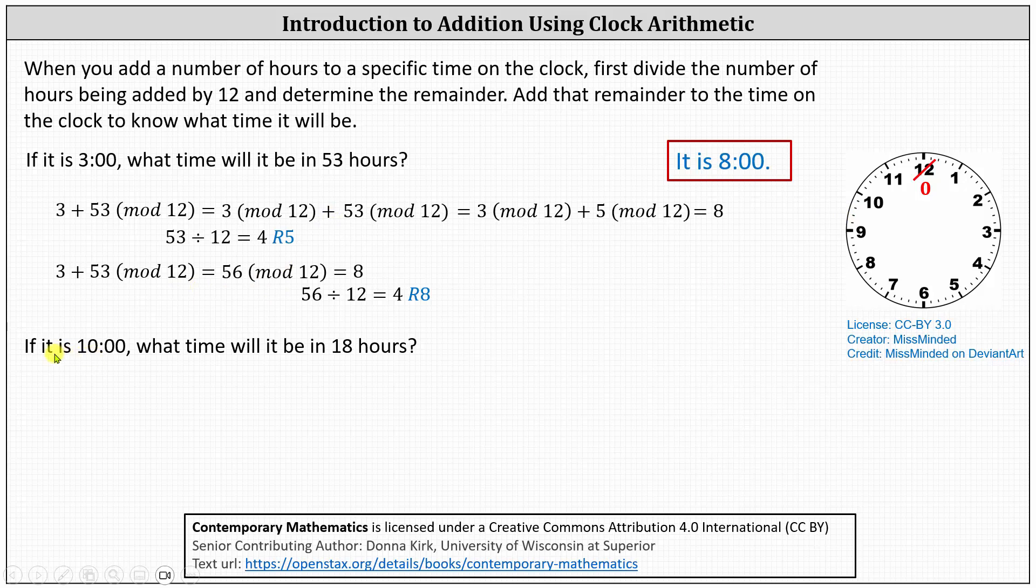And for our second example, if it is 10 o'clock now, what time is it in 18 hours? Let's write this as 10 plus 18 mod 12, which we can also write as 10 mod 12 plus 18 mod 12. 10 mod 12 is equal to 10. 18 mod 12 is equal to 6, which we can also write as 6 mod 12.